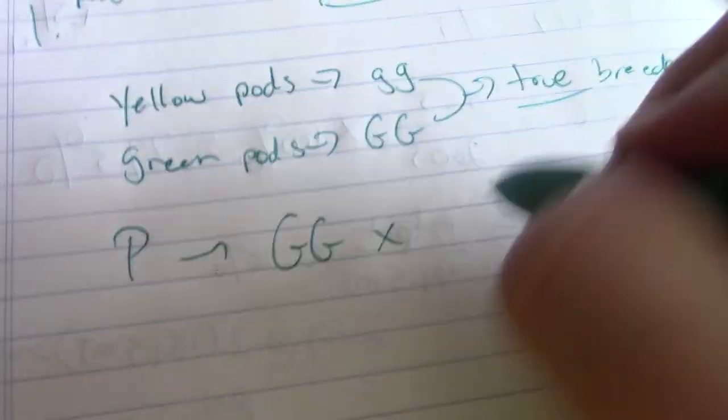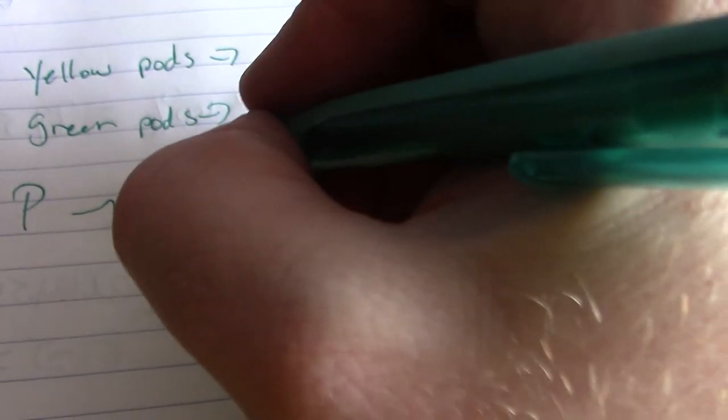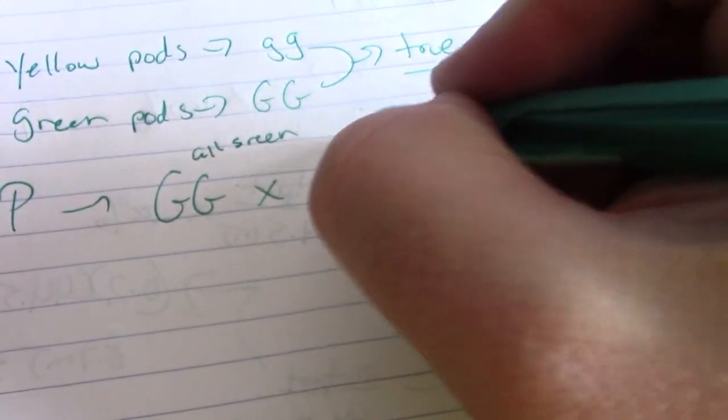Big G, big G, times little g, little g. Okay, so we have all green and all yellow.